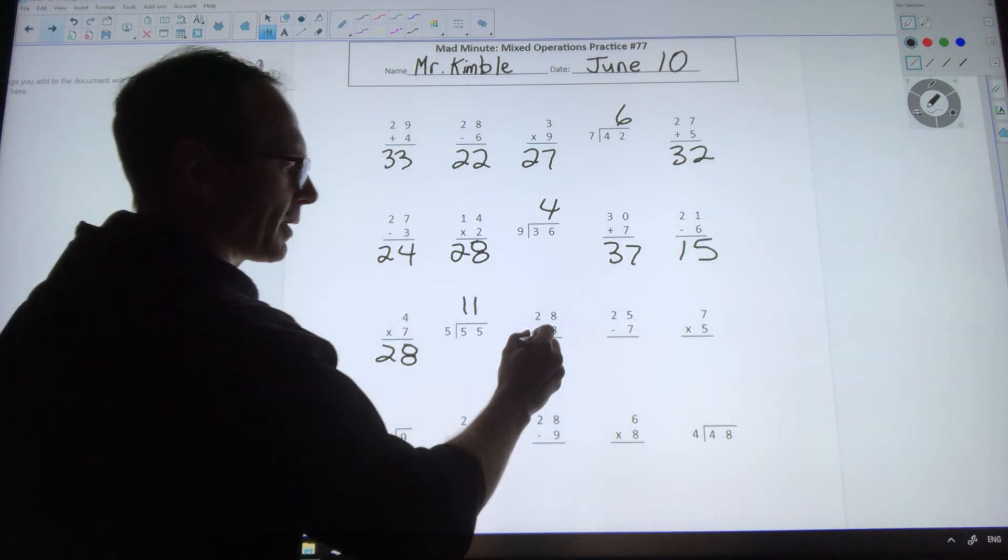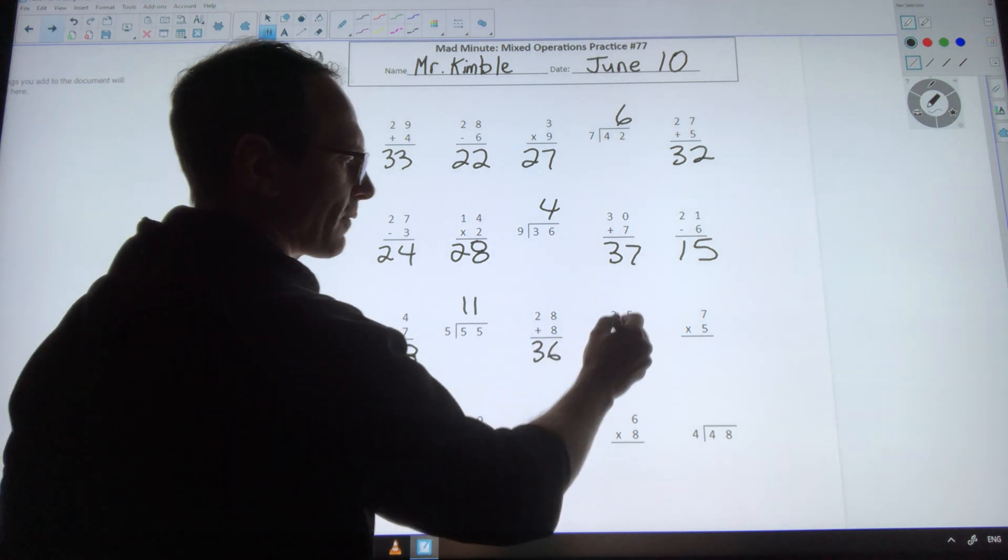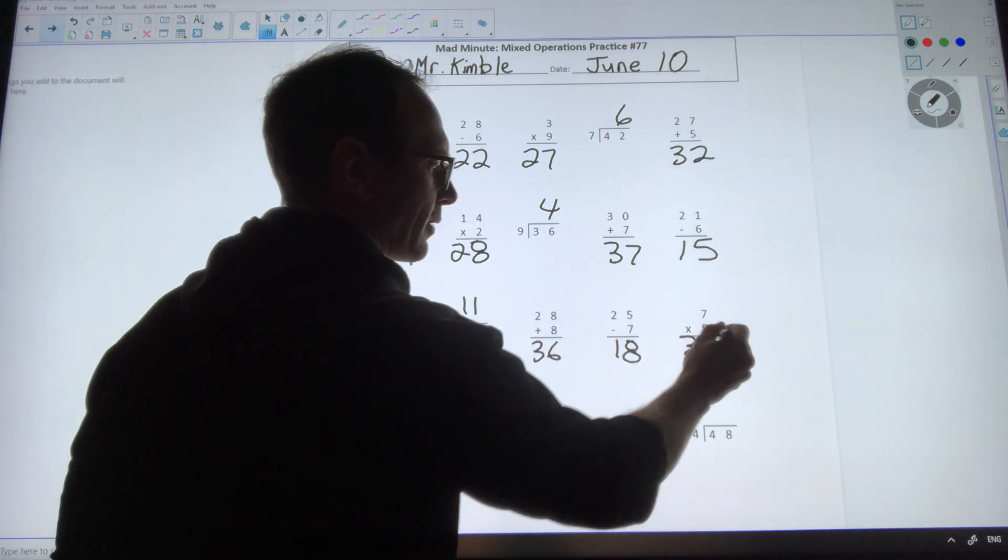28 plus 8 is 36. 25 minus 7 is 18. 7 times 5 is 35. 9 divided by 3 is 3.